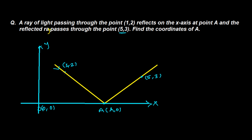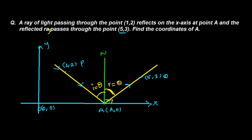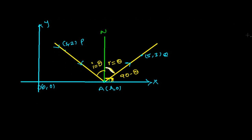Let me label this point PA — ray PA is coming in, and ray AQ goes away after reflection. We need to find the coordinates of A. For that, we draw the perpendicular NA at point A. We know the rule in reflection of light: the angle of incidence always equals the angle of reflection. So angle of incidence I equals theta, and angle of reflection R also equals theta. The complete angle is 90 degrees, so the remaining angle must be 90 minus theta.